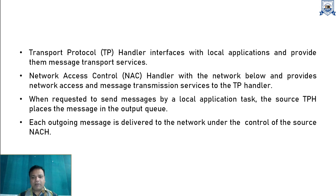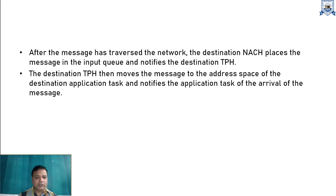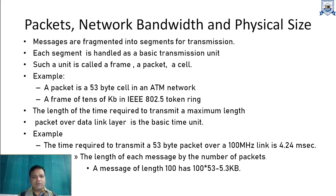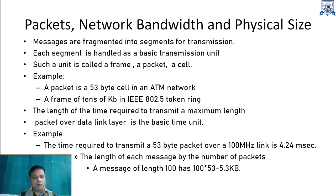When a local application task requests to send a message, the source TPH places the message in the output queue. Regarding quality of service, all messages are fragmented into small segments for transmission, and each segment is handled as a basic transmission unit called a frame, a packet, or a cell, depending on the layer or network type being discussed.